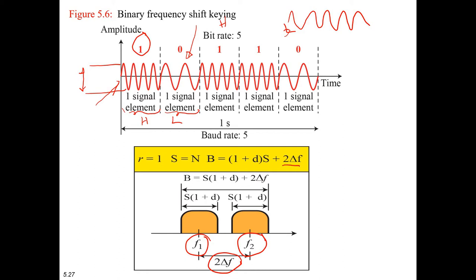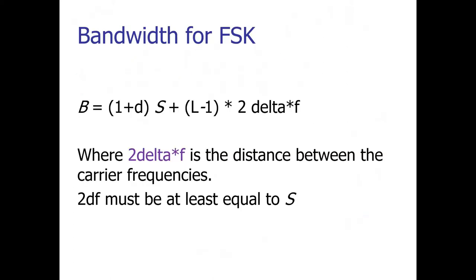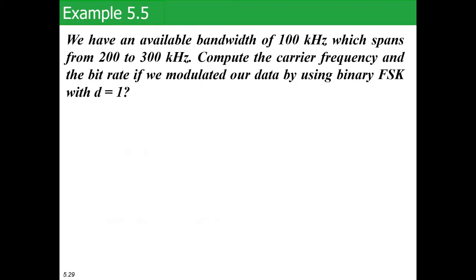The bandwidth formula is: B equals (1 + d) × s + 2 delta f, where 2 delta f represents the difference between the two carrier frequencies. Here r equals 1 because one signal element is represented by one bit. Since s equals c × n / r and both r and c are 1, s equals n. The general FSK bandwidth formula is B equals (1 + d) × s + (l − 1) × 2 delta f, where 2 delta f must be at least equal to s.